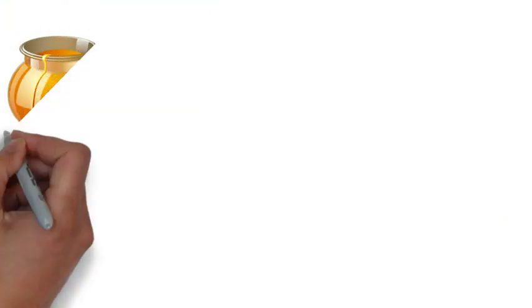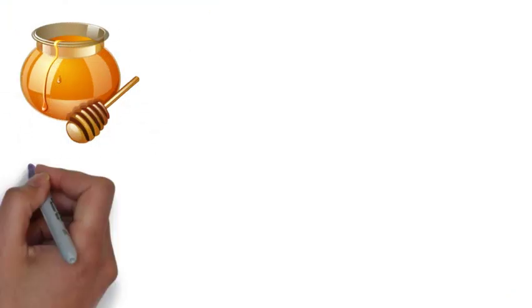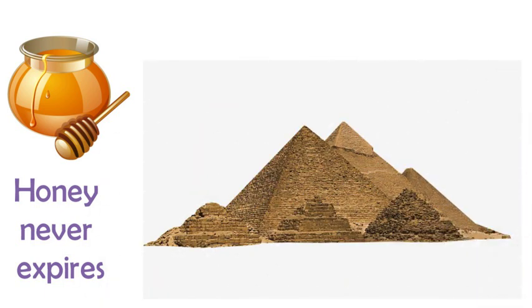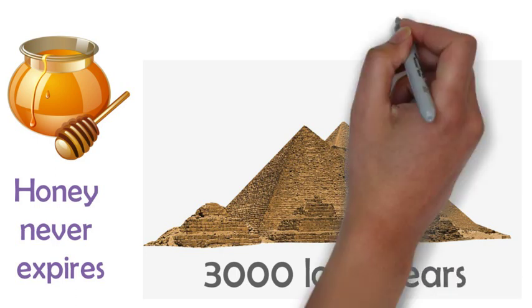Crystallization is a process by which natural honey preserves itself and will not rot for ages. In fact, honey which was found in Egyptian pyramids was suitable for human consumption even after 3,000 long years, and yes, that honey was in crystallized form.